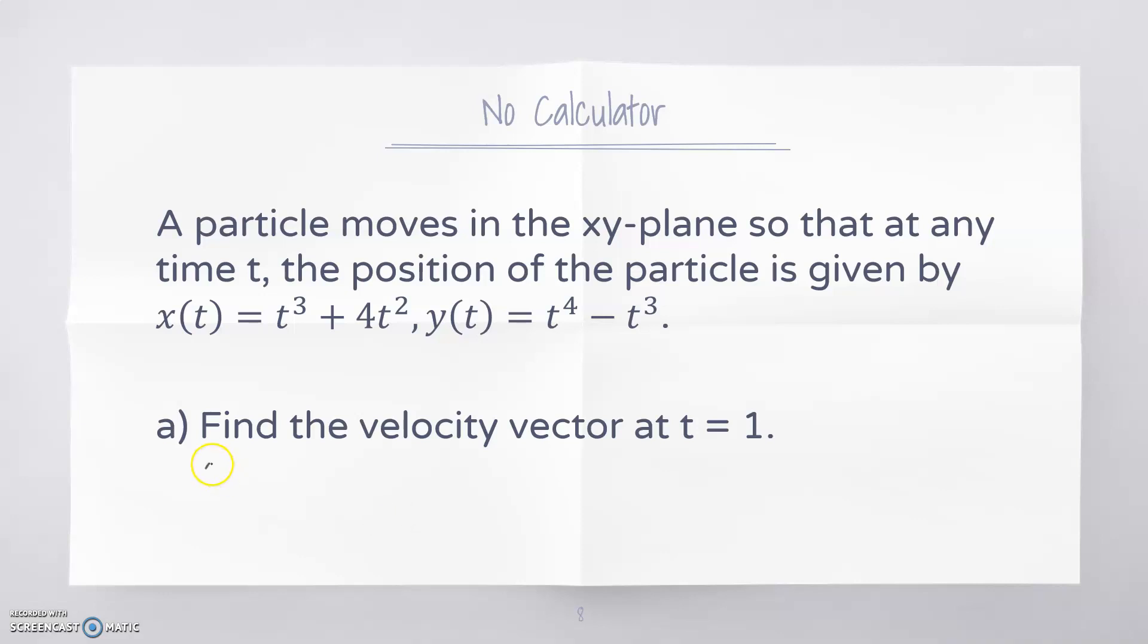The velocity vector is going to be the derivative with respect to time. At t = 1, that would be 11, and y' would be 1. So our velocity vector at t = 1 would be ⟨11, 1⟩, and our particle is moving more quickly to the right than it is moving up.